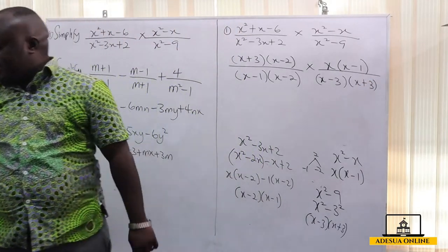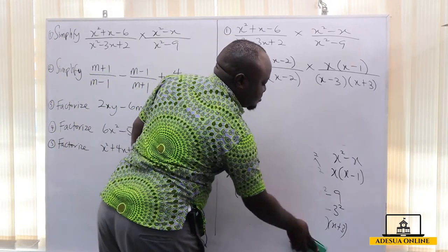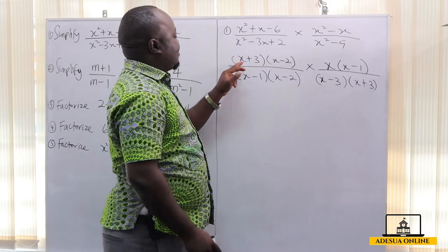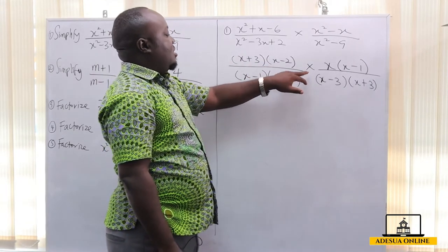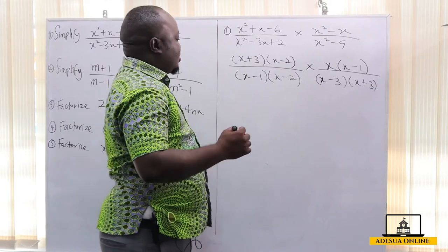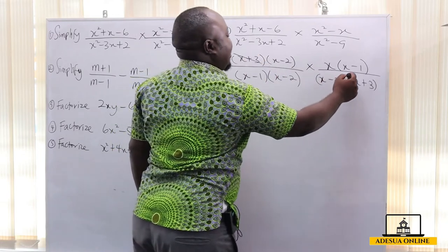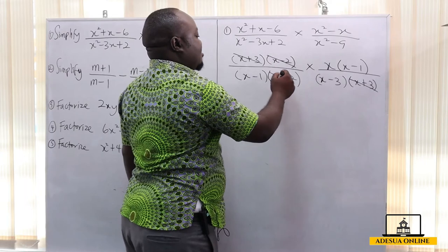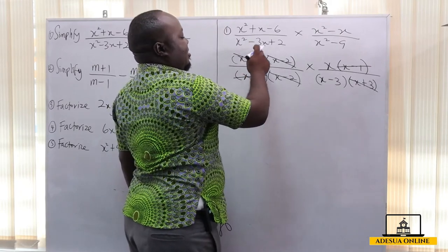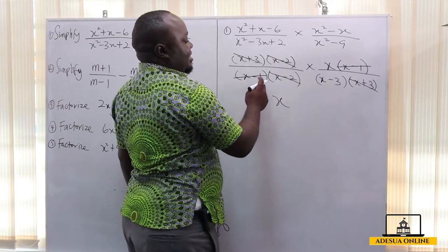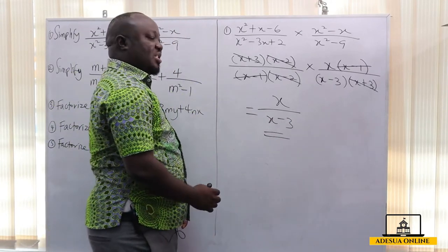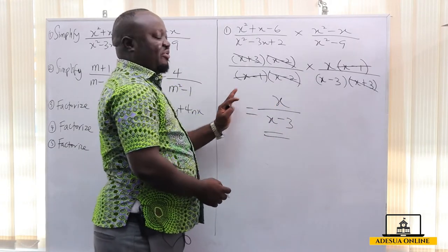Now we are going to simplify the expression. We have [(x+3)(x-2)] / [(x-1)(x-2)] multiplied by [x(x-1)] / [(x-3)(x+3)]. We cancel the common factors: (x+3) cancels, (x-2) cancels, and (x-1) cancels. So the final answer is x over (x - 3). Please don't go ahead and cancel this x and this x. This is our final answer — leave it this way.